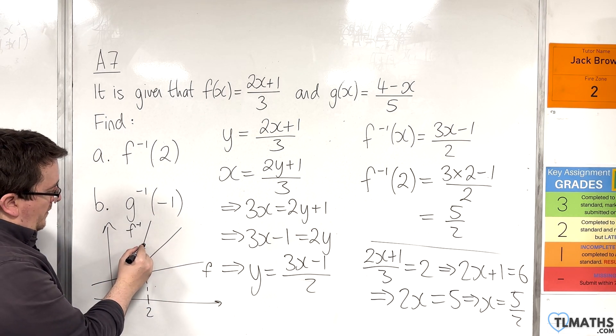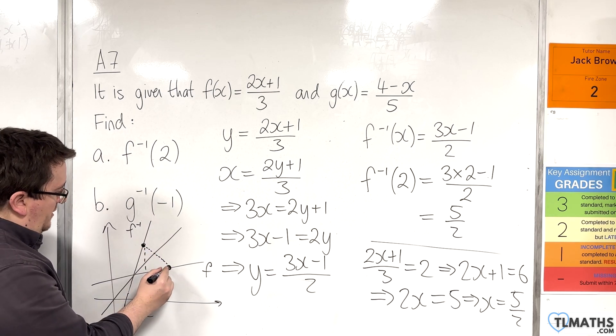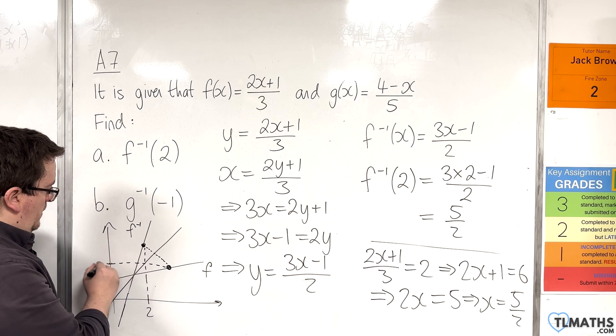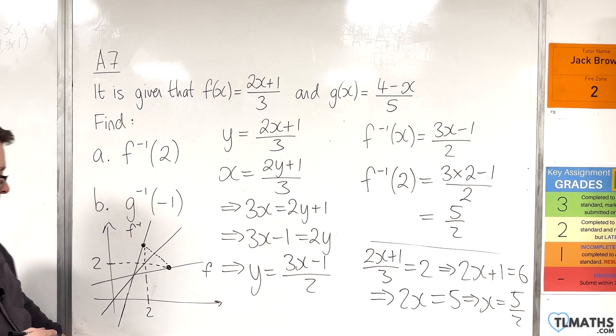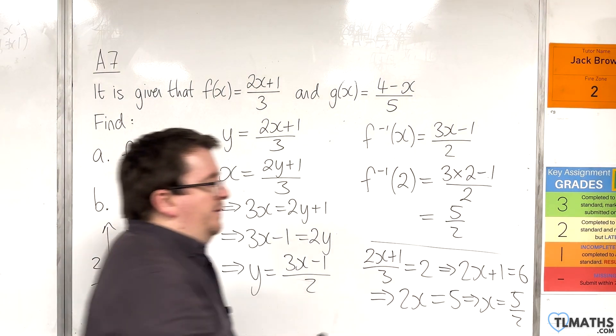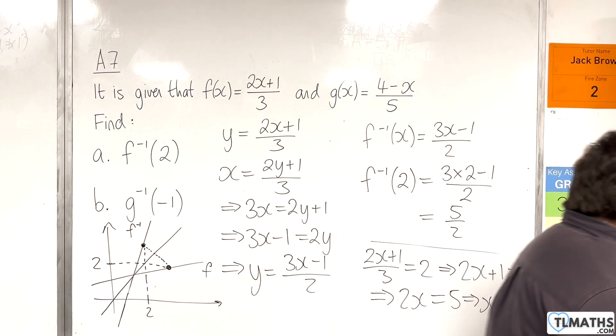Well, in actual fact, that point reflected down in the y equals x line will give you a y coordinate of 2. So, in actual fact, the y coordinate becomes 2, and I can solve it that way. Okay. Let's try the next one.